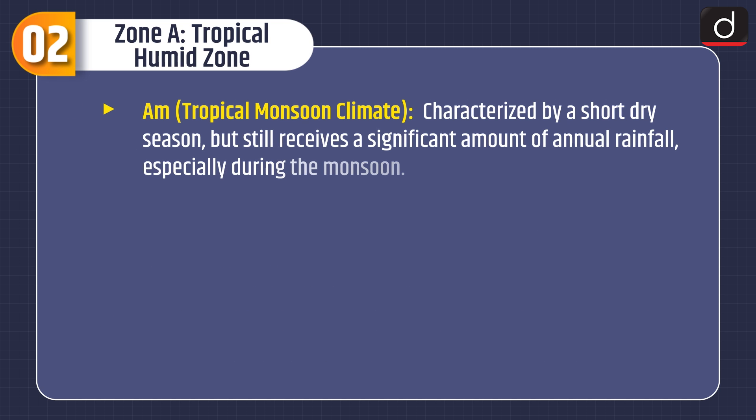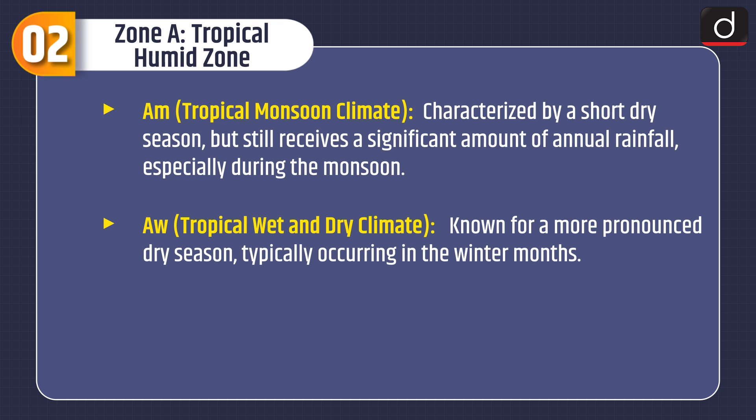AM, Tropical Monsoon Climate, is characterised by a short dry season but still receives a significant amount of annual rainfall, especially during the monsoon. AW, Tropical Wet and Dry Climate, is known for a more pronounced dry season, typically occurring in the winter months.